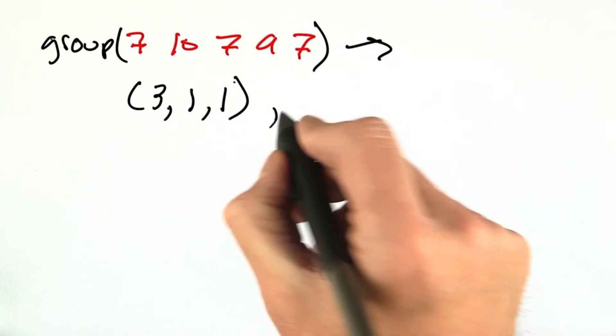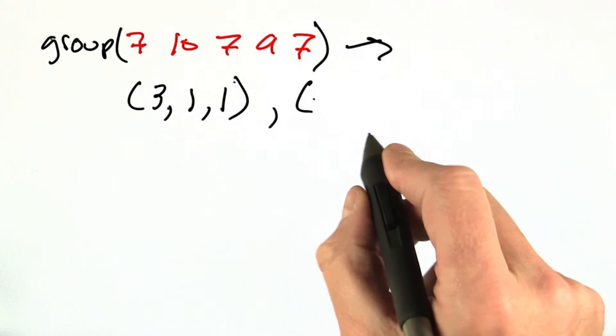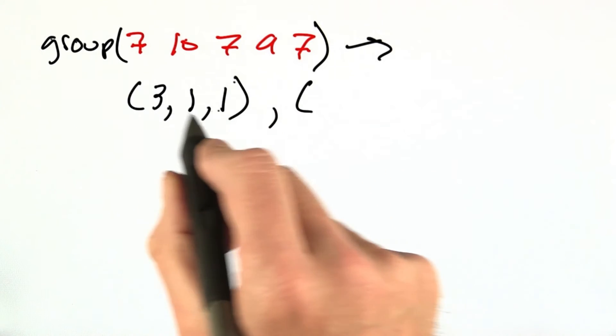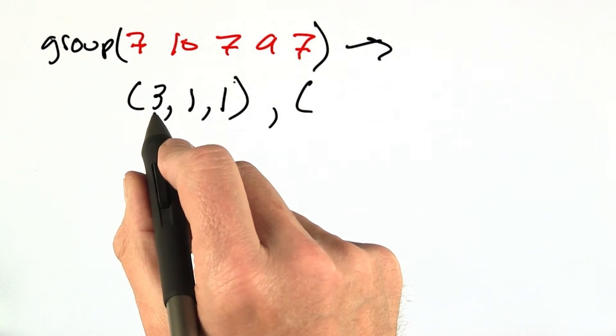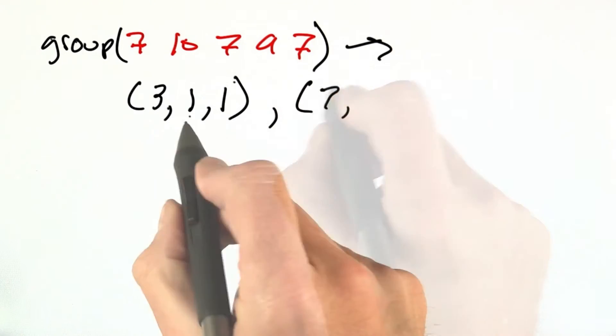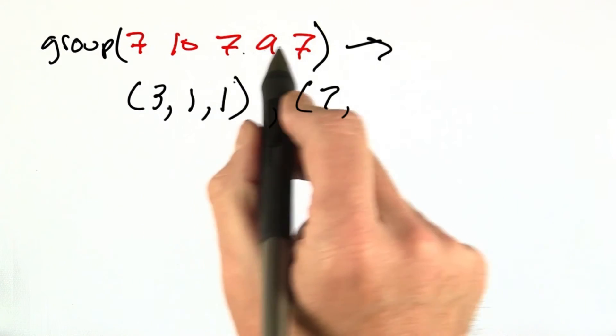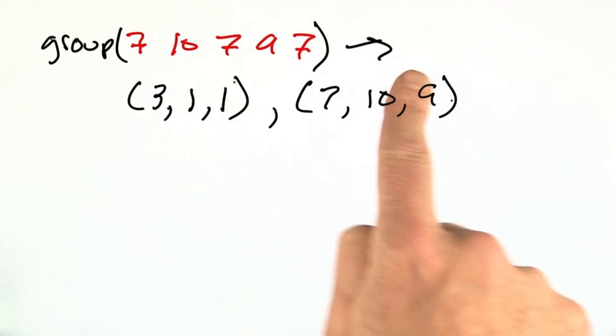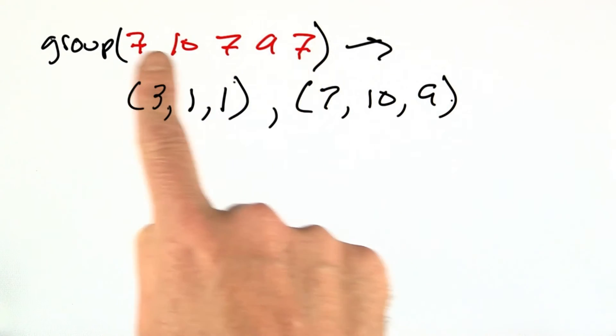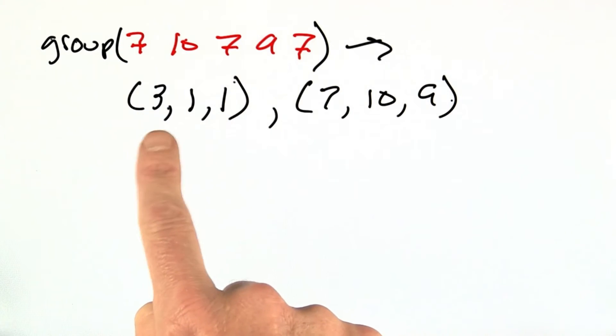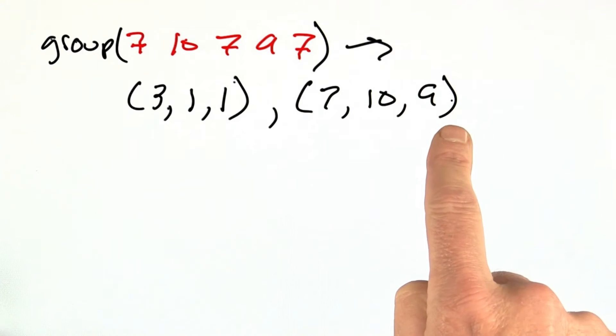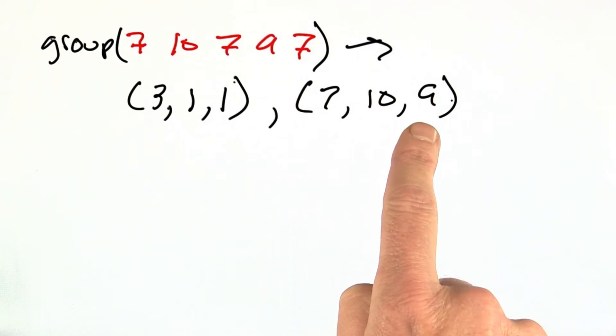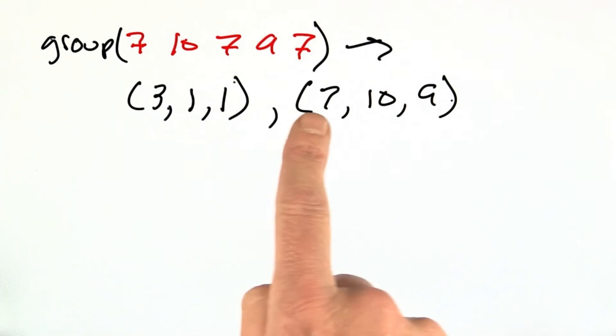Then the second value that groups is going to return is the card ranks for each of these. What do we have 3 of? We have 3 7s. What do we have 1s of? Well, 10s and 9s. We're going to put those in order of biggest first. This representation of taking this hand and turning it into a counts and a list of ranks is in some ways a better representation of exactly how a poker hand counts.